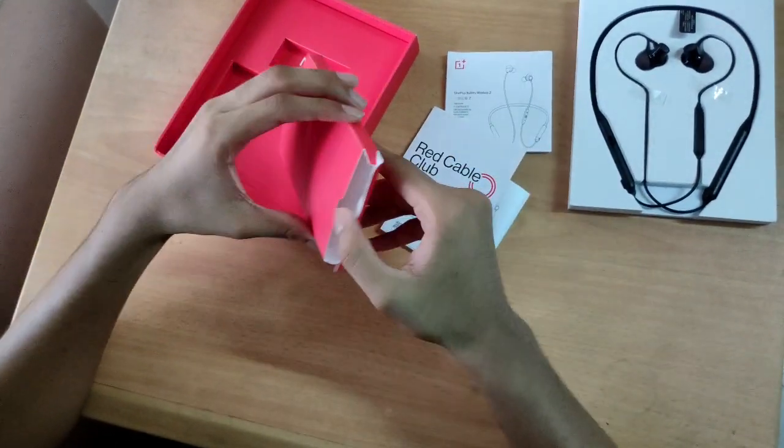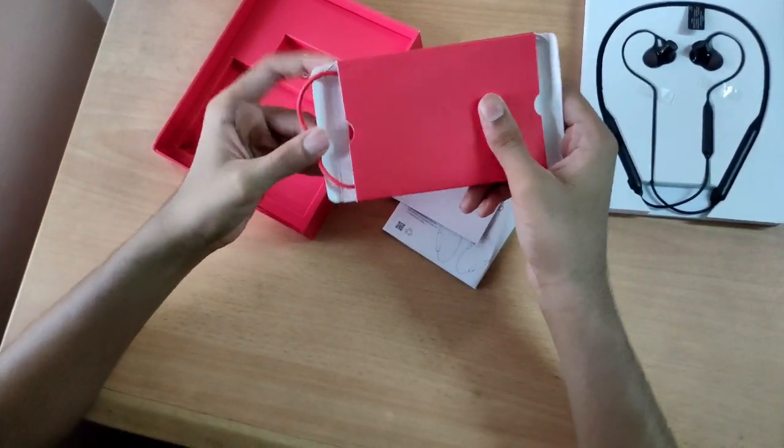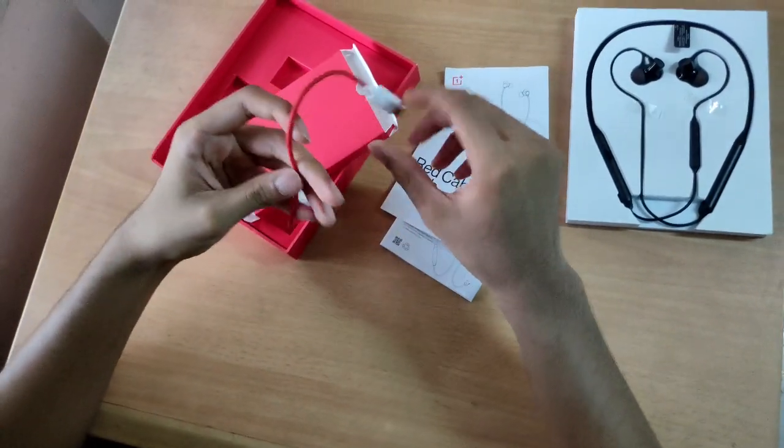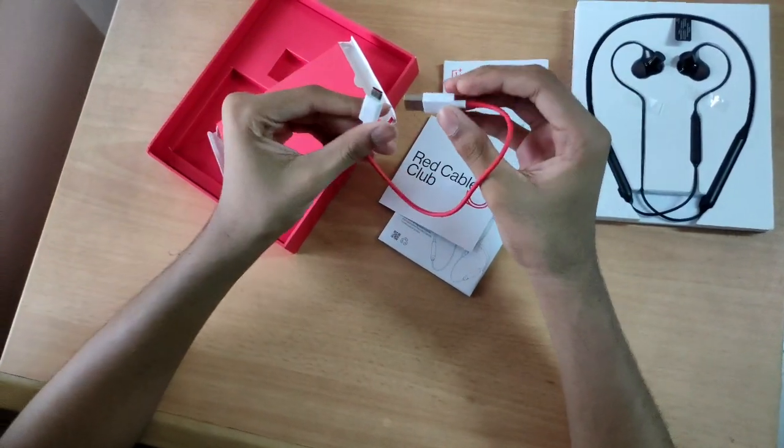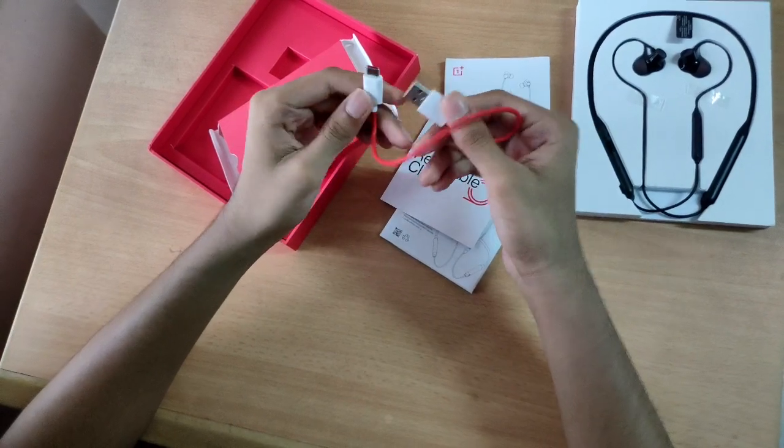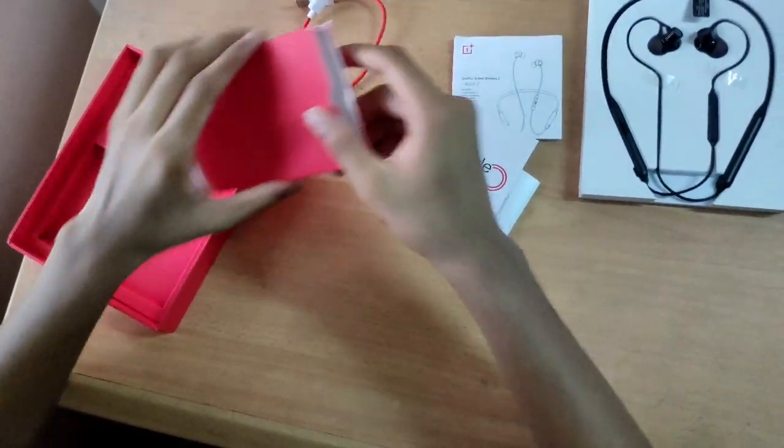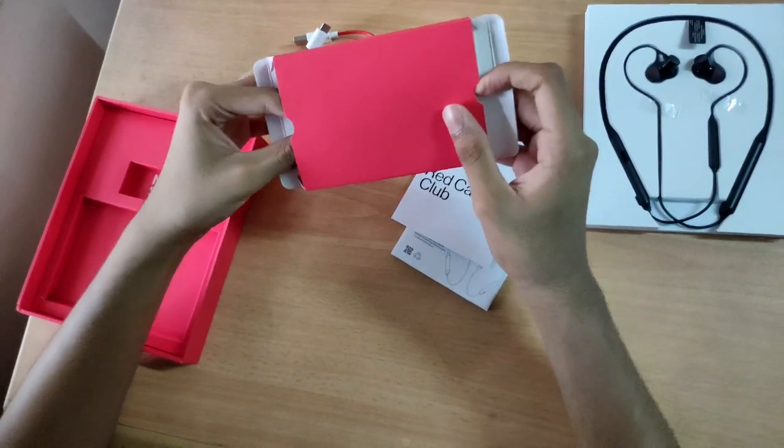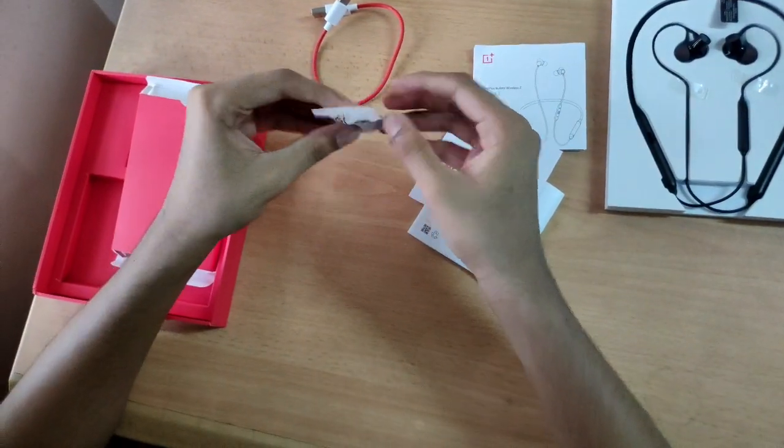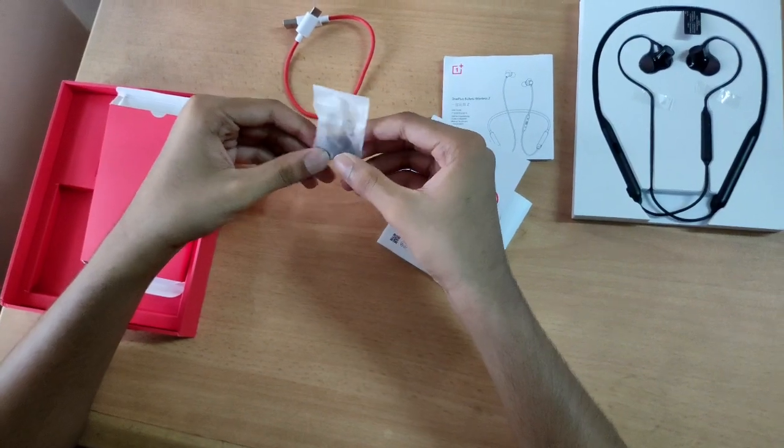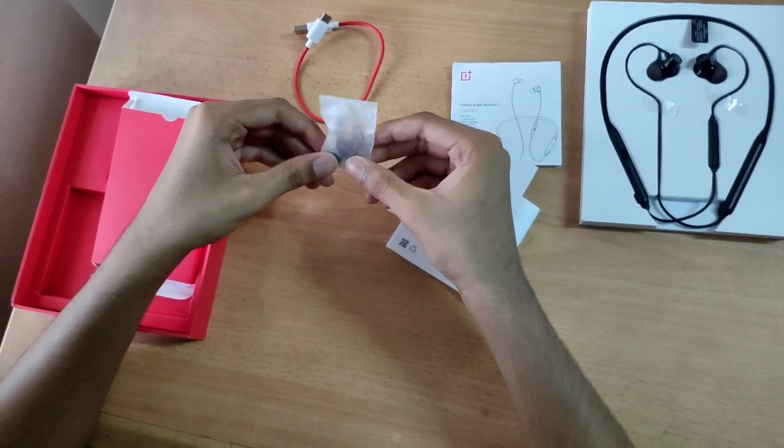You can see the OnePlus red cable USB Type-C charger for the wireless headset, and we have a set of extra ear tips which are sized small, medium, and large.